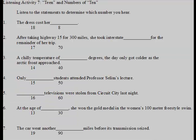Listening Activity 7: Teen and numbers of 10. Listen to the statements to determine which number you hear, then repeat each statement after the speaker.